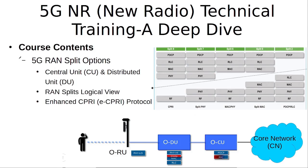Then we discuss the different 5G RAN split options — how the 5G RAN is split into the central unit and the distributed unit, how the protocol layers are divided between these two units, and what are the pros and cons of using different split options. We also discuss the enhanced CPRI protocol that is used on the fronthaul between the distributed unit and the remote radio unit.